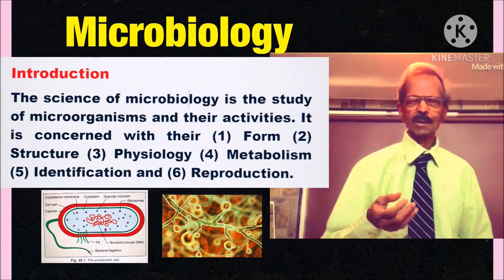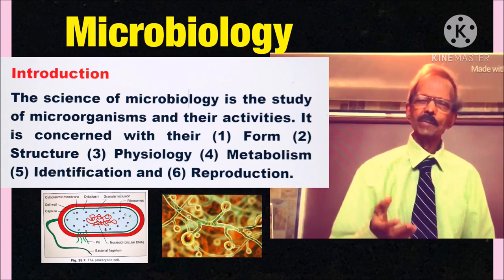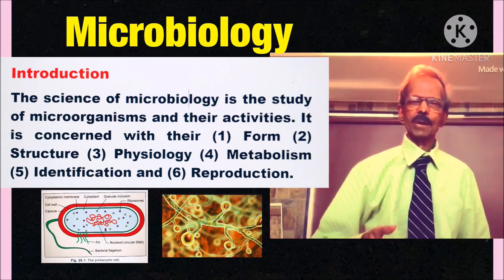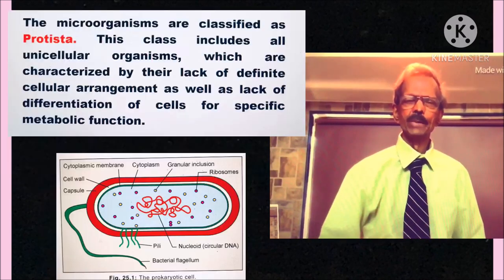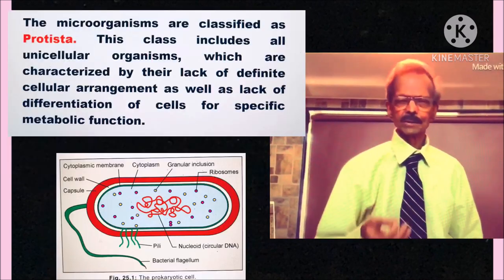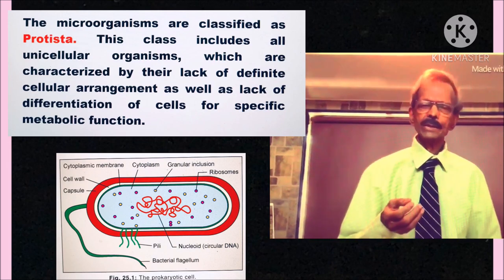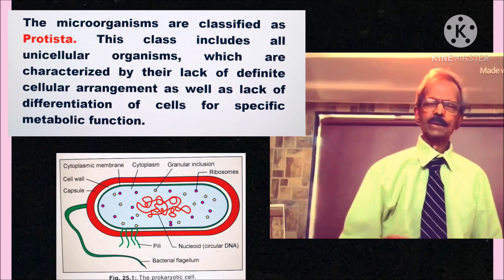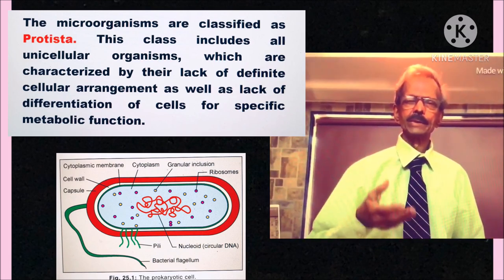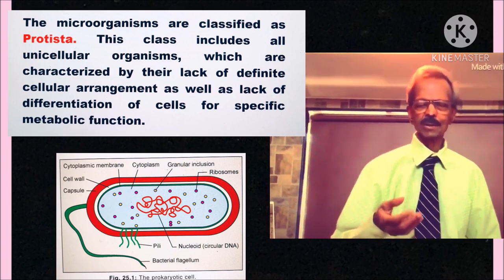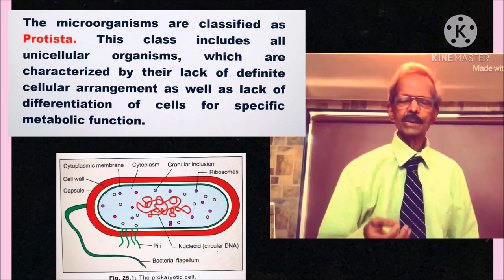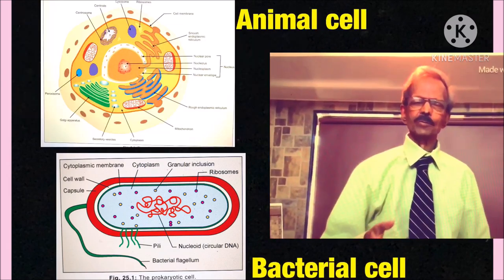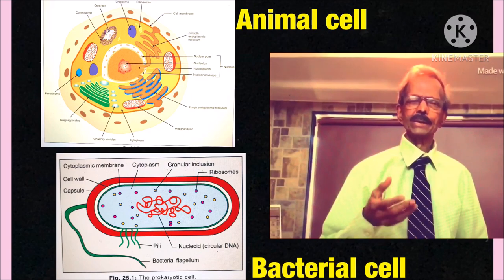It is concerned with their form, structure, physiology, metabolism, identification and reproduction. The microorganisms are classified as Protista. This class includes all unicellular organisms which are characterized by their lack of definite cellular arrangements as well as lack of differentiation of cells for specific metabolic functions. Just compare a bacterial cell with an animal cell and you will realize the difference.